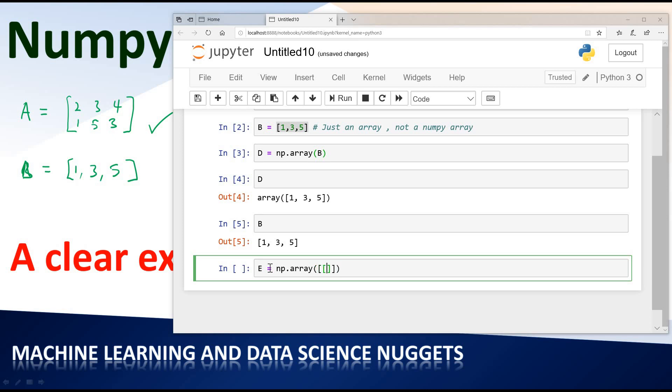If you want to create a two-dimensional array you need to specify each row of the array in a different square bracket. So in this case you have 2, 3, 4 and the second row will be 1, 5, 3. So we have row 1, row 2 and then the entire array is enclosed in another square bracket. Now if I run it, it runs perfectly.